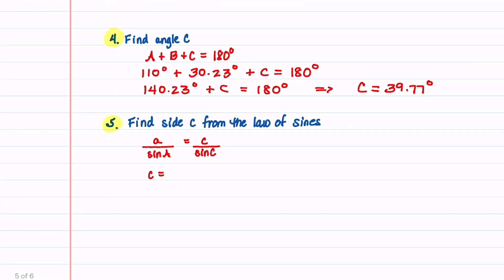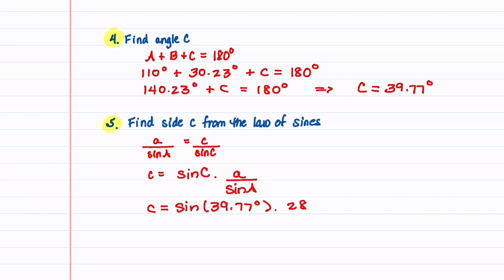Our last step is to find side C using the law of sines. C equals sine of angle C times side A divided by sine of angle A. Plugging in: sine of 39.77 degrees times 28, divided by sine of 110 degrees, gives us a value of 19.06. We now have values for angle A, angle C, and side C.